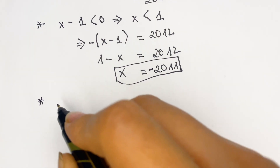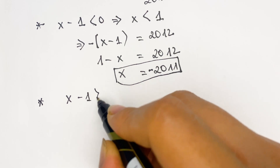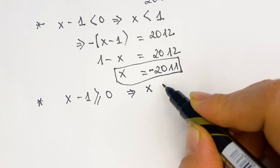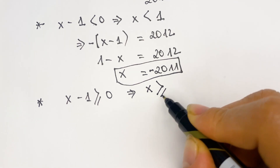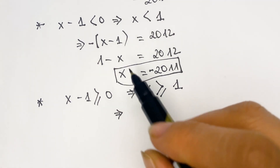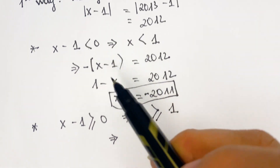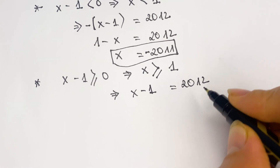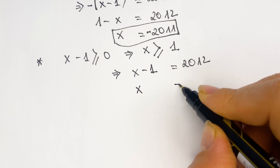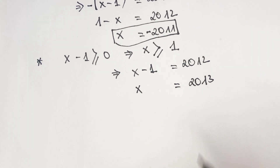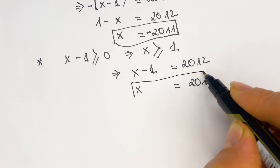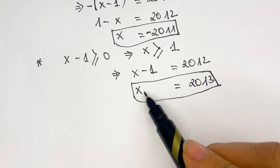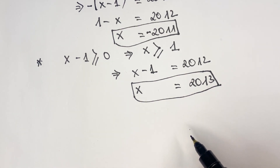For the second case, x minus 1 is greater than or equal to zero, so x is greater than or equal to 1. We rewrite the equation as x minus 1 equals 2012, therefore x equals 2013. So we have two values of x: x equals minus 2011 and x equals 2013.